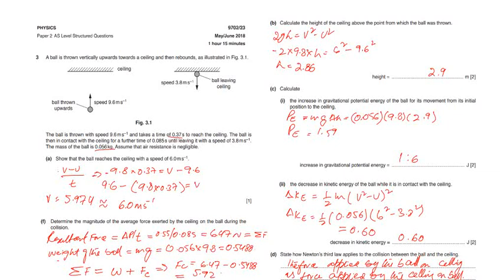Assume that air resistance is negligible. Show that the ball reaches the ceiling with a speed of 6 meters per second. The equation is v equals u plus g times t.